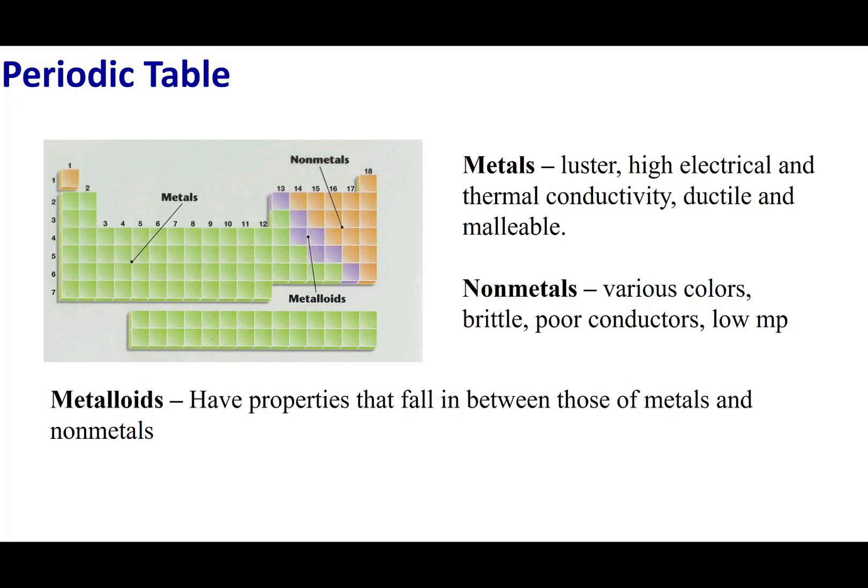A metallic compound is something which has high luster meaning it's very shiny. It has very good conductivity both electrically and thermally. And it is ductile and malleable. Ductile meaning it can be pulled into wires. Malleable meaning it can be pounded into flat sheets. Most of the periodic table is considered metallic.